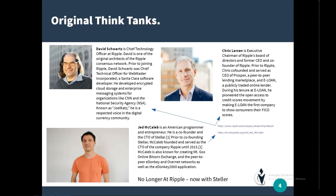Jed McCaleb is an American programmer and entrepreneur. He's a co-founder and CTO of Stellar, because he no longer works at Ripple — that relationship only lasted a couple of months after the coding was done. Jed McCaleb wanted to take it in a different direction, which wasn't agreed upon by the rest of the crew, so they parted ways. He is co-founder and CTO of both Ripple and Stellar.